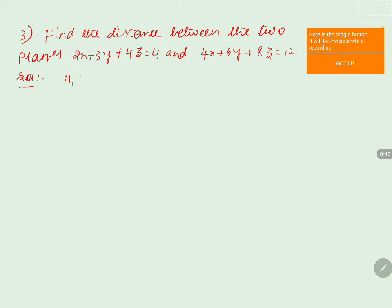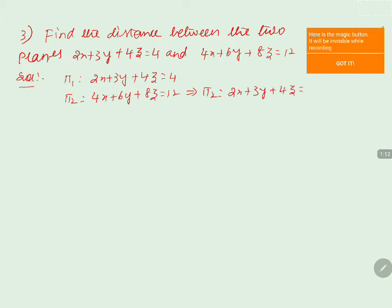The first plane is given as 2x plus 3y plus 4z equals 4. The second plane equation is 4x plus 6y plus 8z equals 12. If you divide the second plane equation by 2, you get 2x plus 3y plus 4z equals 6. Observing both planes, the coefficients are 2, 3, and 4 in both cases, so we can say that they are parallel.